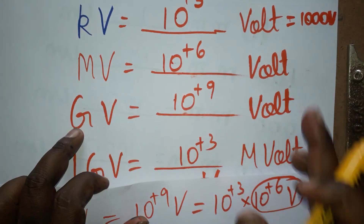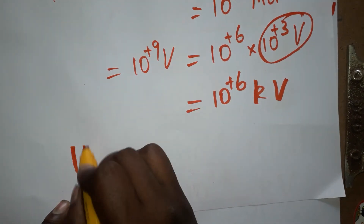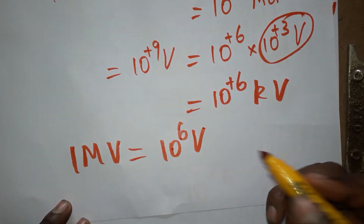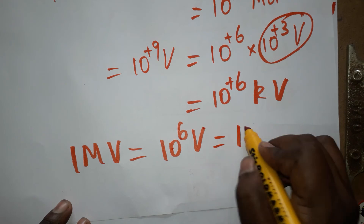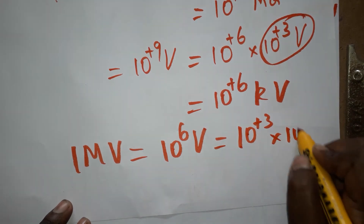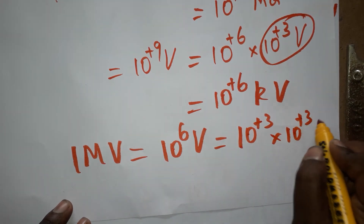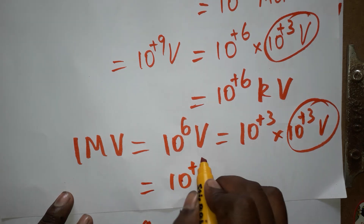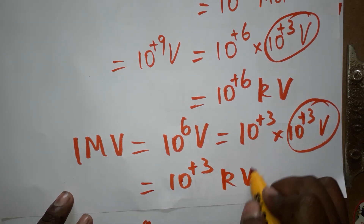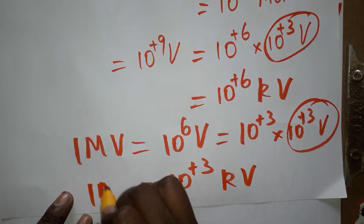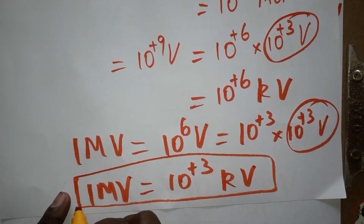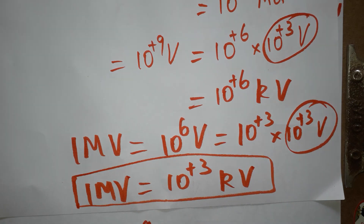Then 1 MV is equal to KV. 1 MV is equal to 10 power 6 V, so 10 power 6 we can write as 10 power plus 3 into 10 power plus 3 V. This is going to be KV, so it is 10 power plus 3 KV. 1 MV is 10 power plus 3 KV. If you like my channel, please subscribe. Thank you for watching my video, thank you everyone.